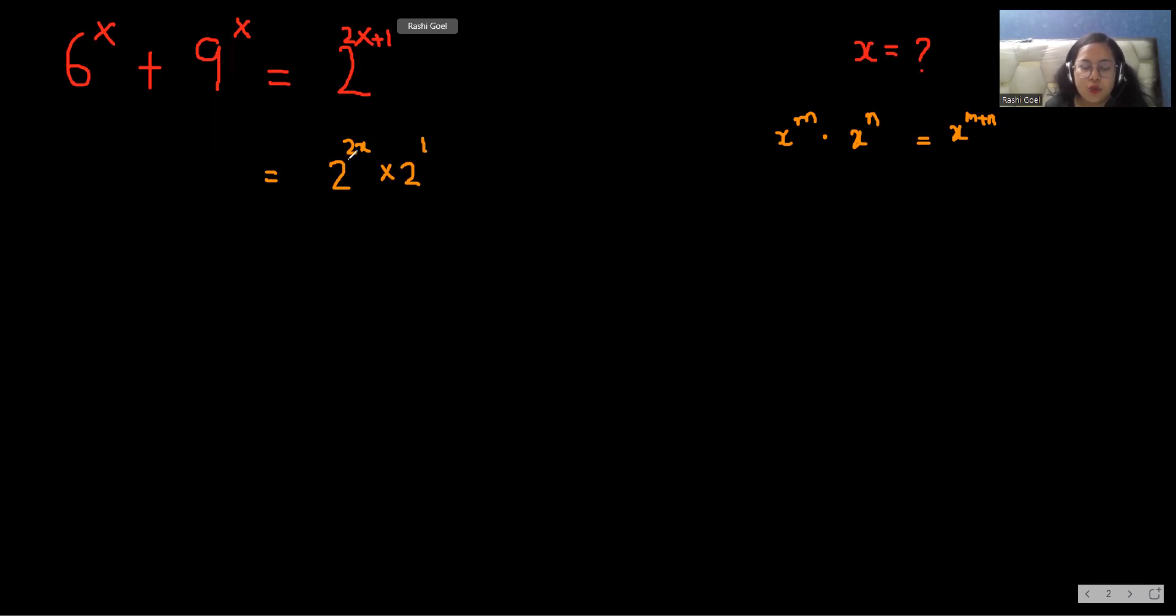And this 2^(2x) multiply 2^1, we can write it as x^m to the power n equals x^(mn). So we can write it as (2^2)^x multiply 2^1. So 2^2 is 4.